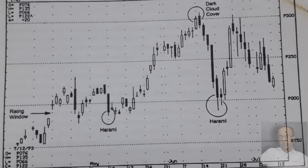This chart illustrates how June's dark cloud cover short-circuited the prior rally. The sell-off from this pattern found a floor at April's window. The low of June's price decline was a harami, which appeared within the support band as predicted by the window. This same combination of a harami within the window also emerged in May. Notice how the June rebound from the window stalled at the resistance area set up by the dark cloud cover.